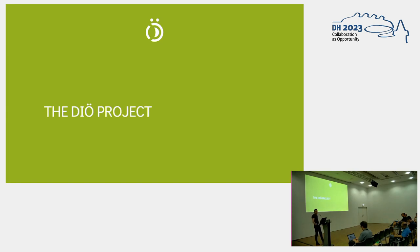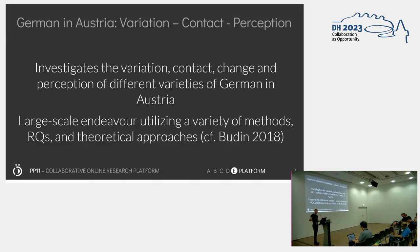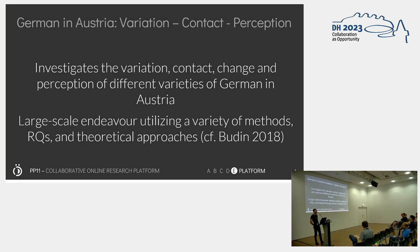The DUE project — Deutsche Österreich, or German and Austria project — is a very large-scale research project in four universities, in four institutions in Austria, and it basically investigates the variation, context, change, and perception of all kinds of varieties of German in Austria, along different research questions, different theoretical approaches, and with a variety of methods.